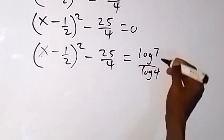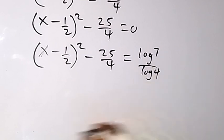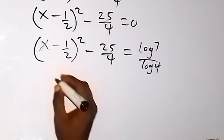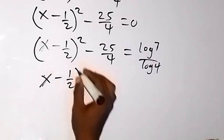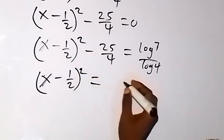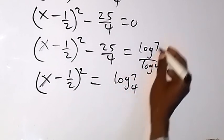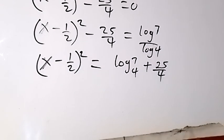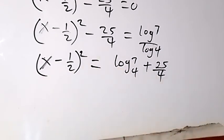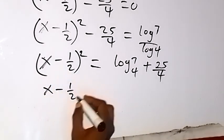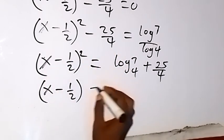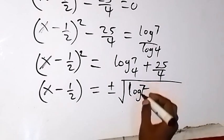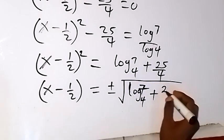We can write log 7 over log 4 as log 7 base 4 — that's change of base. So x minus one half squared equals log 7 base 4 plus 25 over 4, since the minus comes to the other side and becomes plus. Since we are finding x, we take the square root on both sides: x minus one half equals plus or minus square root of log 7 base 4 plus 25 over 4.